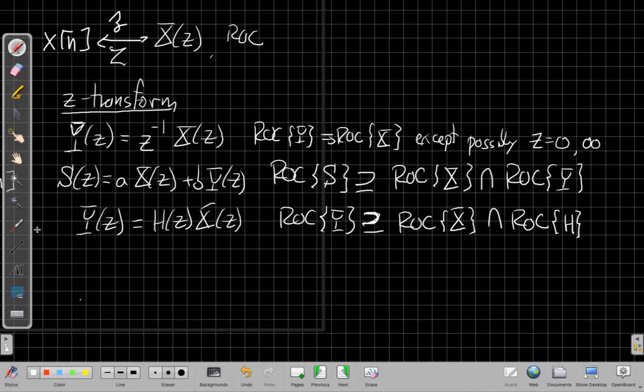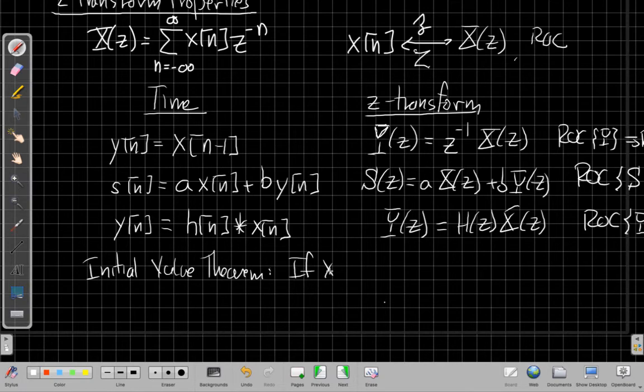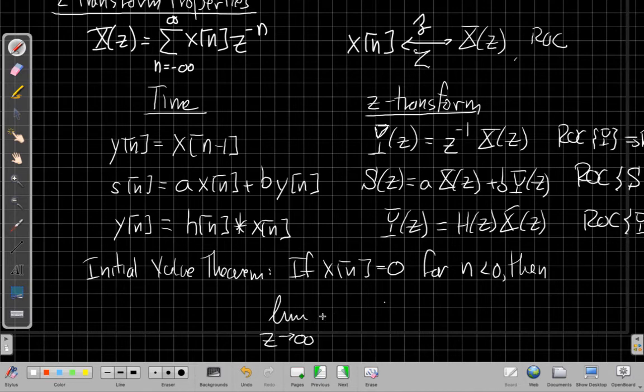Okay, so those are the three properties we'll use over and over again. They're the main ones. Oh, and one more I'll mention is the initial value theorem. It's not really a side-by-side one. But the initial value theorem, what that says is if x[n] is equal to zero for n less than zero, then the limit as z goes to infinity of X(z) is equal to the sequence at n equals zero. So at time zero. So again, that just comes directly from the definition of the sum, but it is important.